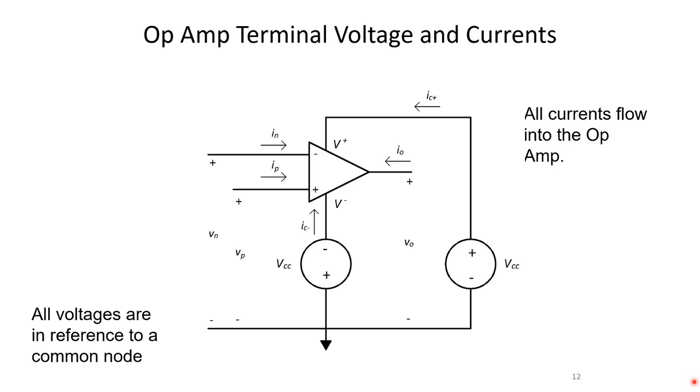For our currents, we're going to assume that all of our currents, when we do current balances, we're going to do a lot of node voltage with op amps when we analyze them, so we'll do current balances. We'll assume that all of the currents flow into the op amp. This will be our diagram, and it'll get a lot simpler. The voltage supplies will go away, and typically we'll just focus on the op amp. If we need them, we'll just write them right next to the op amp.